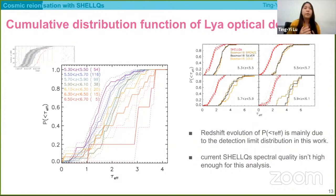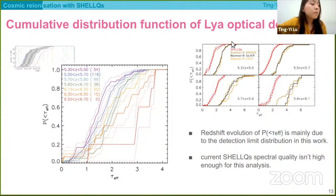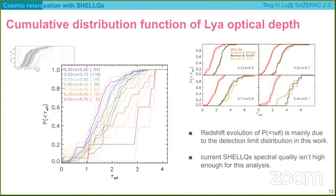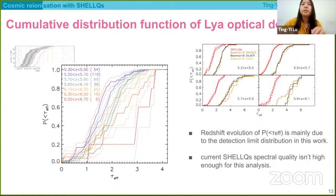Tom Toons asks: is the data also consistent with a model in which brighter galaxies dominate the emissivity? Actually, we didn't compare to those models, so we cannot answer this right now, but we will try to answer this on Slack.